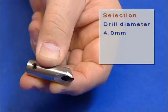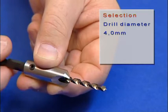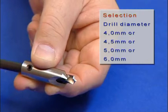And this is how it works. Selection of the drill diameter: 4.0 millimeters, or 4.5 millimeters, or 5.0 millimeters, or 6.0 millimeters.